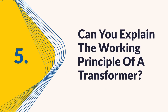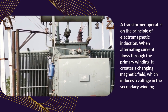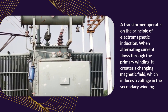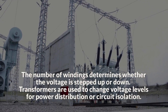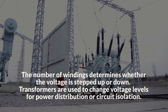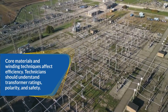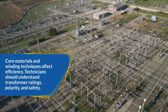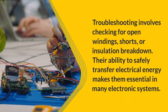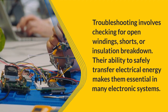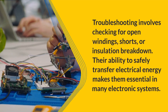Question 5: Can you explain the working principle of a transformer? A transformer operates on the principle of electromagnetic induction. When alternating current flows through the primary winding, it creates a changing magnetic field, which induces a voltage in the secondary winding. The number of windings determines whether the voltage is stepped up or down. Transformers are used to change voltage levels for power distribution or circuit isolation. Core materials and winding techniques affect efficiency. Technicians should understand transformer ratings, polarity, and safety. Troubleshooting involves checking for open windings, shorts, or insulation breakdown. Their ability to safely transfer electrical energy makes them essential in many electronic systems.